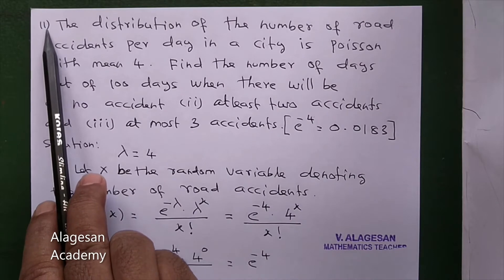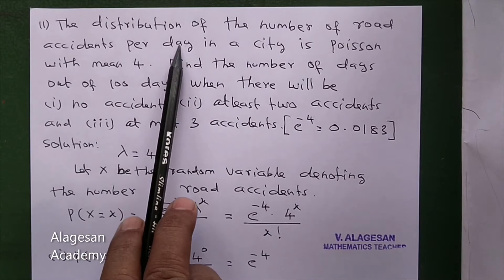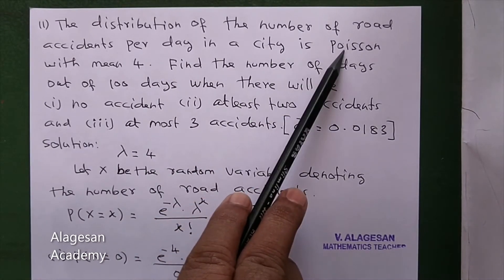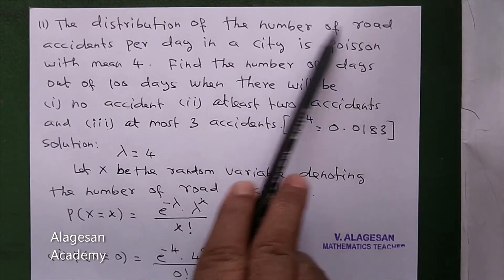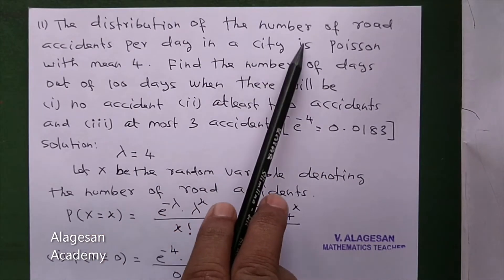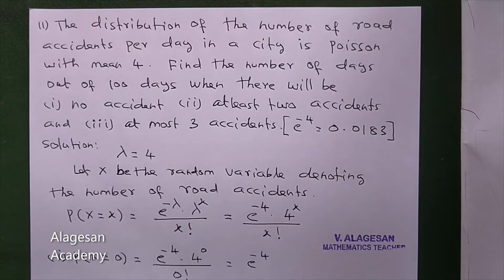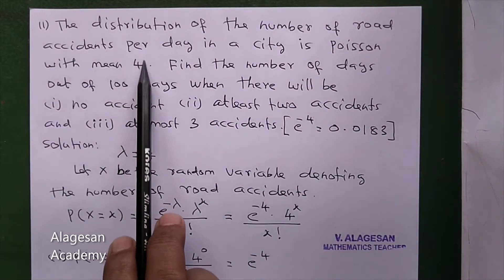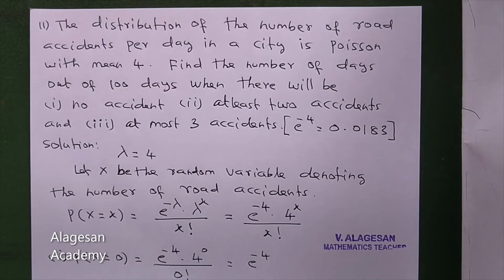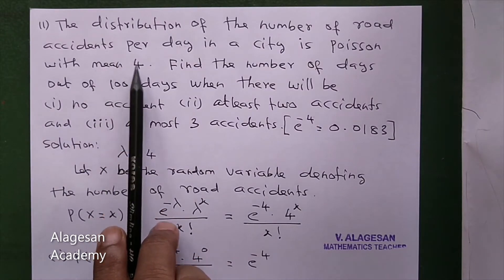Hi students. C equals C number 11. The distribution of the number of road accidents per day in a city is Poisson with mean 4. So per day there are on average 4 accidents. Lambda is given — lambda is equal to 4.